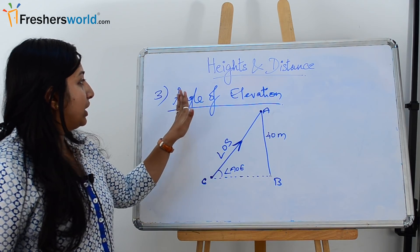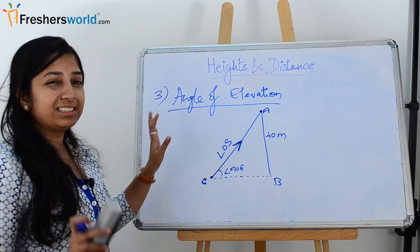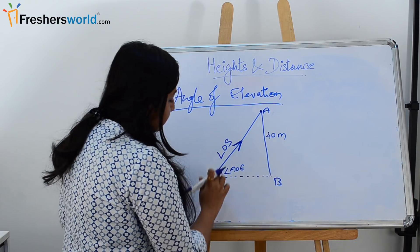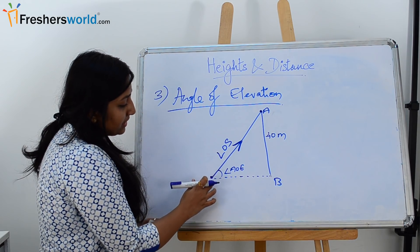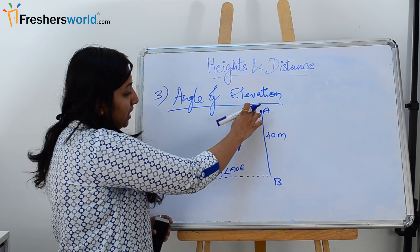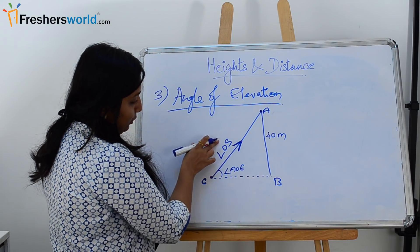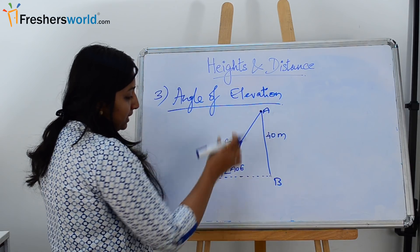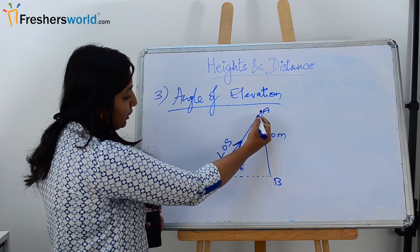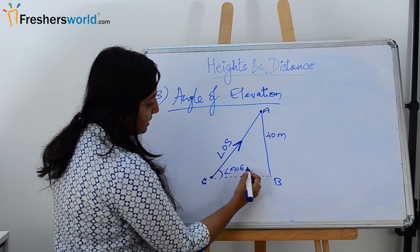To understand angle of elevation: suppose we have a tower AB which is 40 meters long, and a person is standing at point C trying to look at the top tip, point A, of the tower. The line of sight of this person is the line marked as LOC. The angle of elevation is the angle made by the line of sight of the person with the horizontal. This angle is known as the angle of elevation.